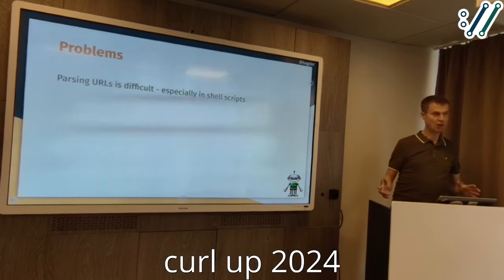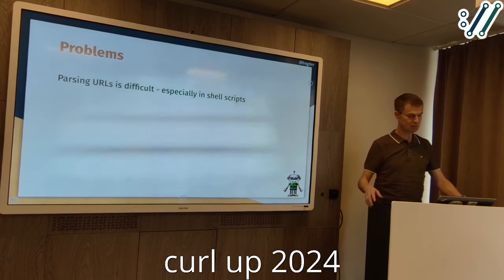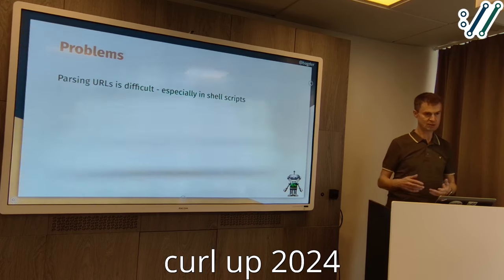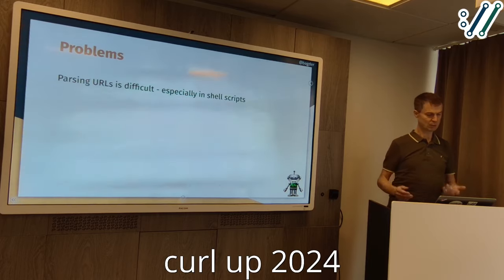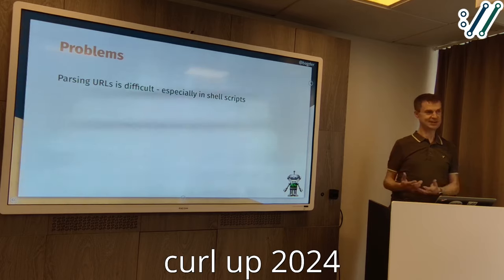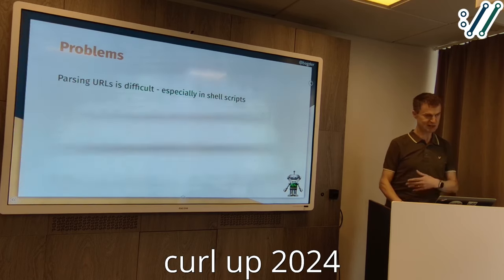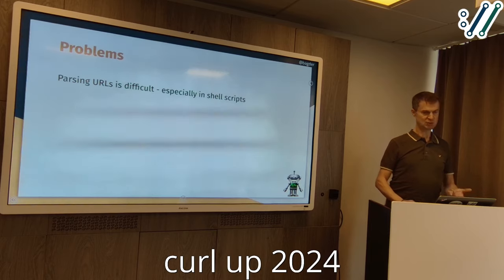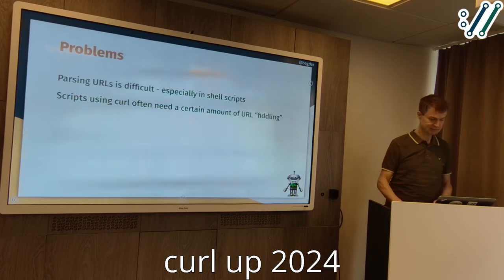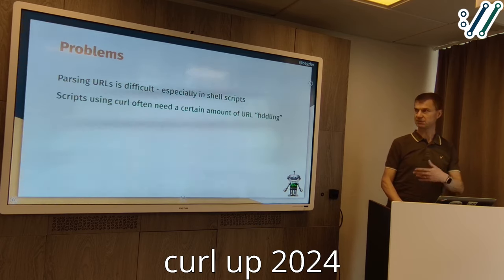So the problem is that it's really hard to parse URLs. It struck me when someone wanted to do something with URLs related to curl — they wanted some information about a URL part when working with curl. It struck me that it's such a difficult task and I really couldn't invent a way to just squeeze that into curl as well. We should really provide a more convenient, easy-to-use tool to help anyone working with shell scripts to manage and produce URLs in an easier way to feed into curl.